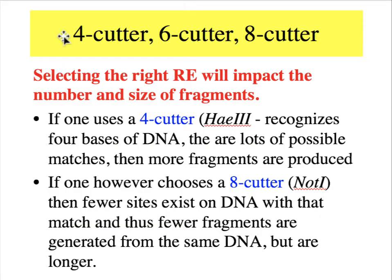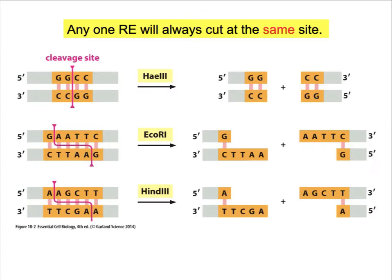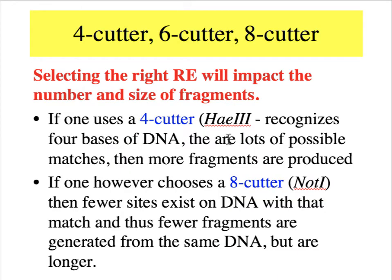Continuing with terminology applicable to restriction enzymes: a restriction enzyme that recognizes a site with four nucleotides is called a four-cutter; one that recognizes six nucleotides is called a six-cutter; and one that recognizes eight nucleotides before cutting is called an eight-cutter. Going back to the previous slide, HaeIII is a four-cutter, EcoRI is a six-cutter, and HindIII is also a six-cutter. For random samples of DNA, the frequency of four bases occurring in a particular pattern is much more frequent than an eight-cutter recognition site. Therefore, a four-cutter cuts more frequently and generates smaller fragments compared to an eight-cutter, giving scientists a choice on the size of fragments generated.